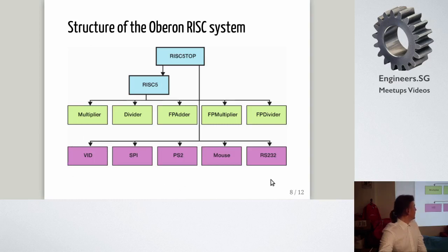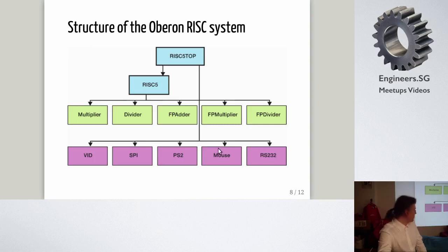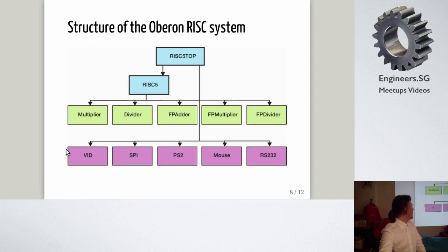The peripherals include RS232 serial interface, PS2 mouse and keyboard, SPI for driving the SD card and file system for permanent storage. That's pretty modern and useful. There's also a video controller.